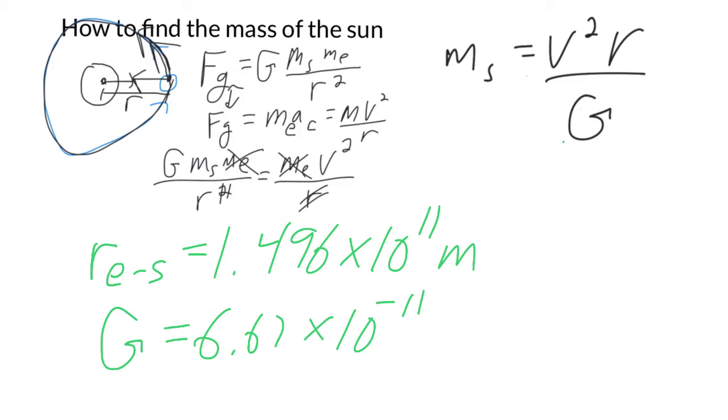Now the velocity of Earth, we could look that up as well, but I think it'd be more fun if we calculate that. We have the Earth going around the Sun, and we know that it makes one big circle and we know it makes that one circle in one year.